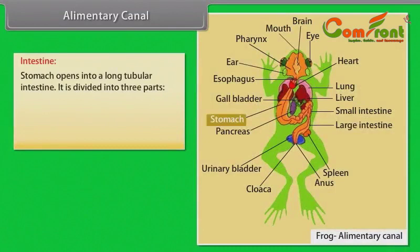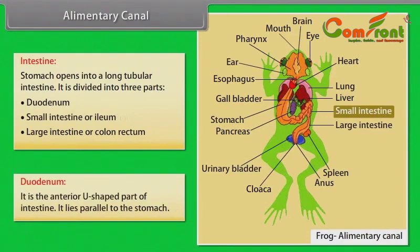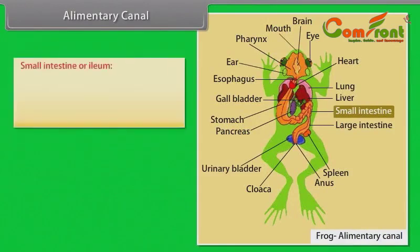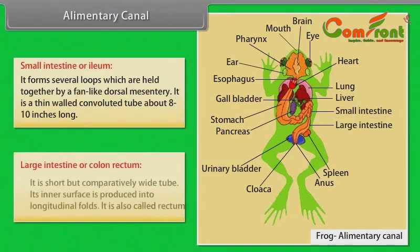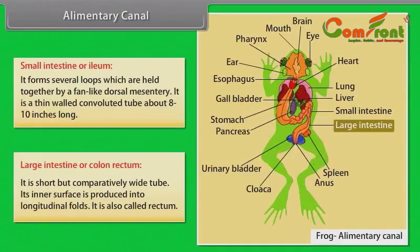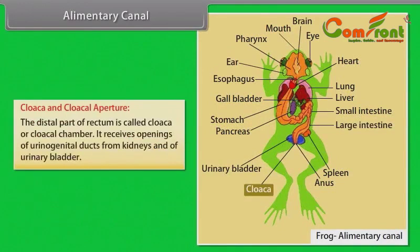Intestine: The stomach opens into a long tubular intestine divided into three parts — duodenum, small intestine or ileum, and large intestine or colon-rectum. The duodenum is the anterior U-shaped part lying parallel to the stomach. The small intestine or ileum forms several loops held together by a fan-like dorsal mesentery; it is a thin-walled convoluted tube about 8–10 inches long. The large intestine or colon-rectum is a short but comparatively wide tube with longitudinal folds on its inner surface. The distal part of the rectum is called the cloaca or cloacal chamber, which receives openings of urinogenital ducts from the kidneys and of the urinary bladder.